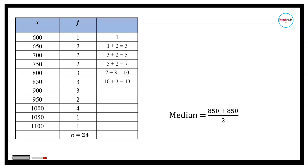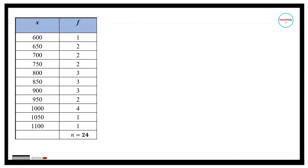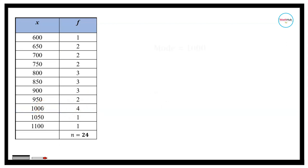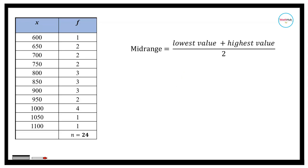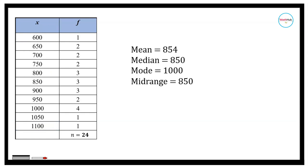The average of 850 and 850 divided by 2 is equal to 850 words per minute, so the median is 850. The mode is the value that appears most frequently. Referring to the frequency column, 1,000 appears four times, so the mode is 1,000 words per minute. For the mid-range, the average of the lowest entry (600) and highest entry (1,100) is also equal to 850 words per minute.